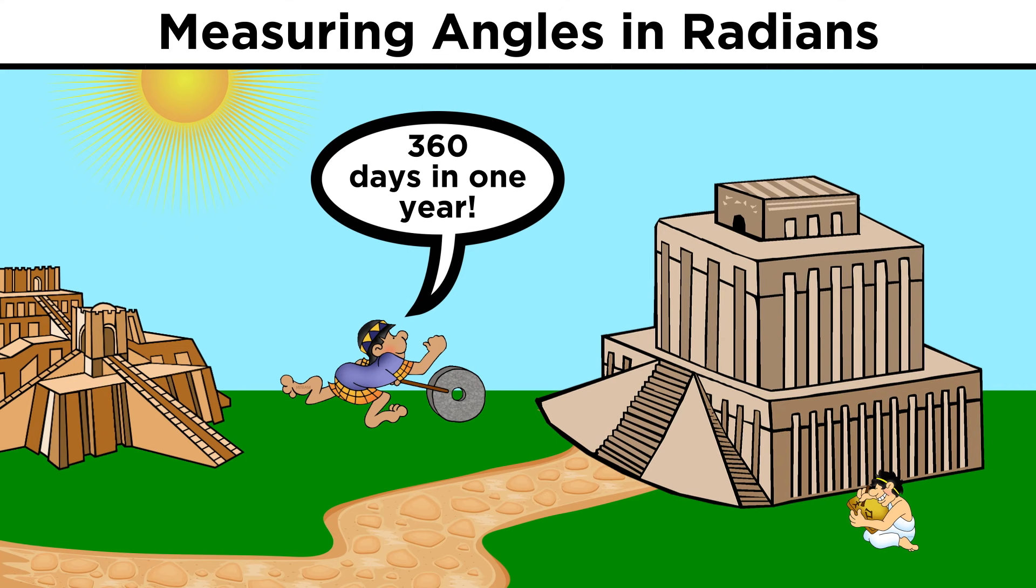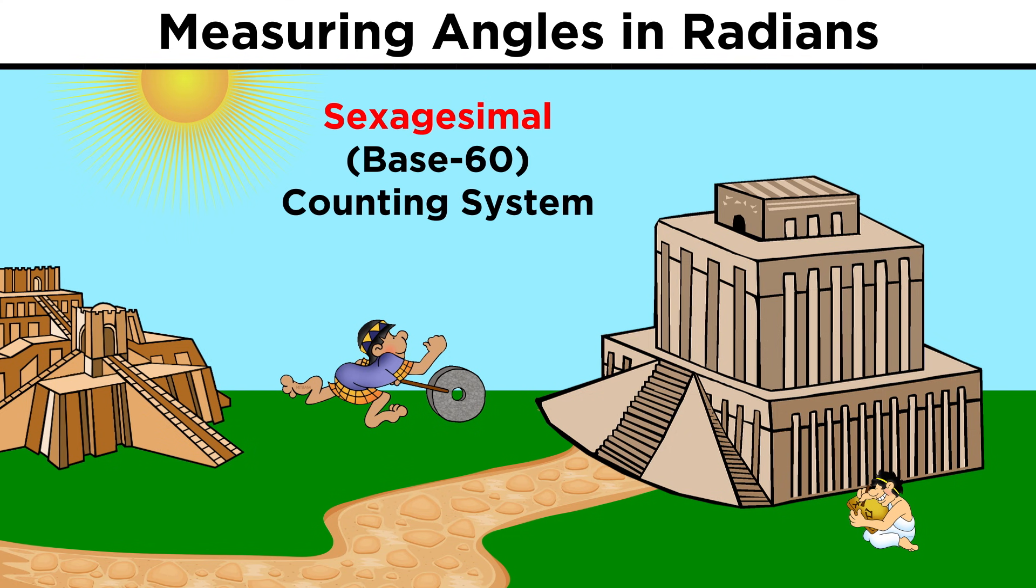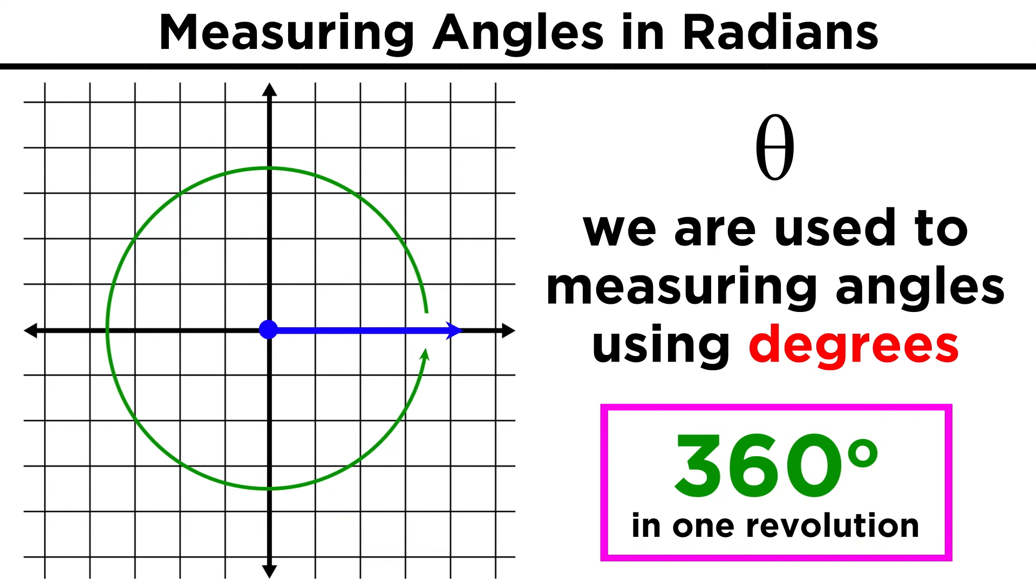Well, we aren't positive, but it seems like the ancient Babylonians were approximating a year as 360 days. Also, they used a counting system based on 60, which you multiply by six to get 360, and 360 has tons of other factors, so it may have been a combination of observation and aesthetics. Whatever the case may be, 360 degrees is a full revolution.